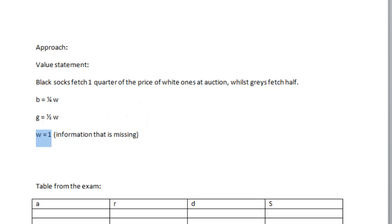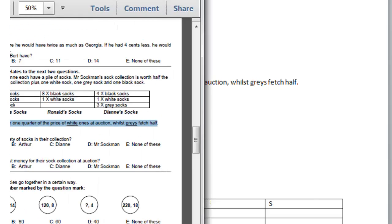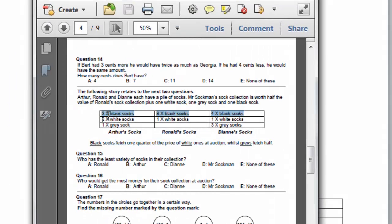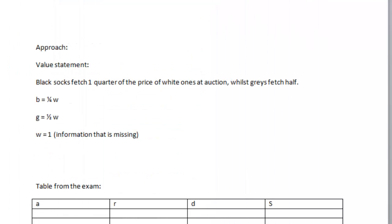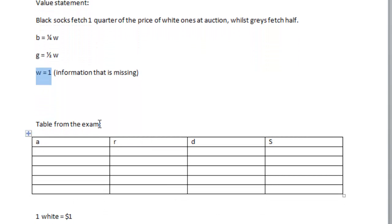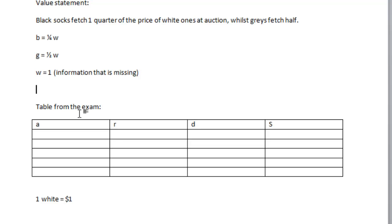Now that we know that black is one quarter, grey is half, and white equals one, we can now calculate based on the information they've given us. So for example, they've given us the quantities of Arthur socks, Ronald socks, and Diane socks, and also this part here. It's interesting to note that Mr. Sockman's sock collection is half the value of Ronald sock collection plus one white sock, one grey sock, and one black sock is shown not within the table format. So it's an additional column within the table. How would you then set this up within the exam? Although you're not allowed to write on the test paper, what you can do is to then write or do your workings on the backside of another piece of paper.